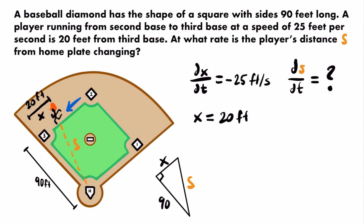By recognizing that these distances form a right triangle, we can use the Pythagorean theorem to relate x and s. The hypotenuse squared equals the sum of the other two sides squared, so: s² = x² + 90². This equation relates the two variables we're working with, and we can now take its derivative with respect to time.